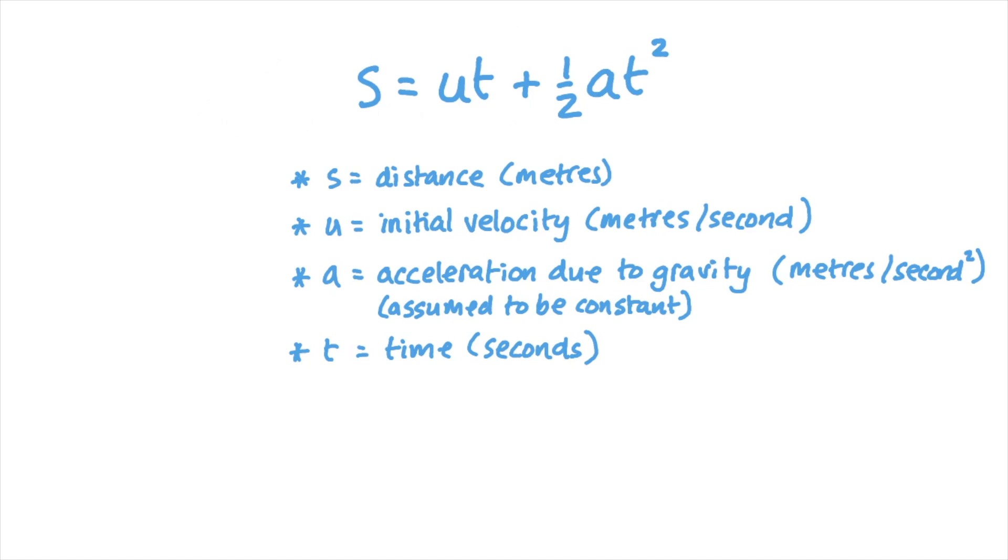S equals ut plus a half at squared, where s is the distance traveled in meters, u is the initial velocity of the object in meters per second, t is the time taken in seconds, and a is the constant rate of acceleration of the object in meters per second per second.